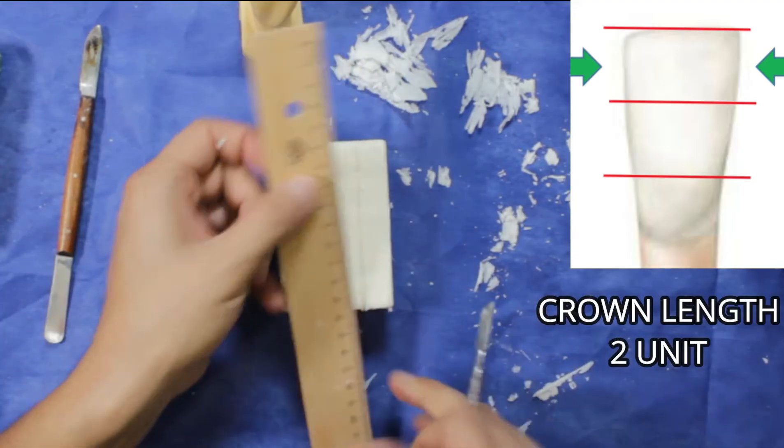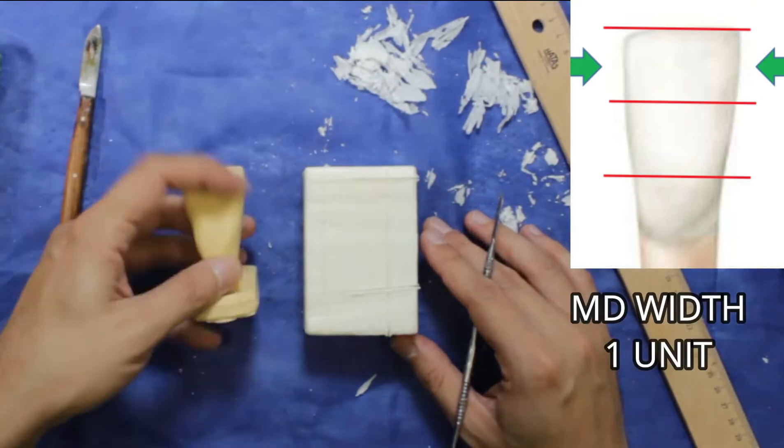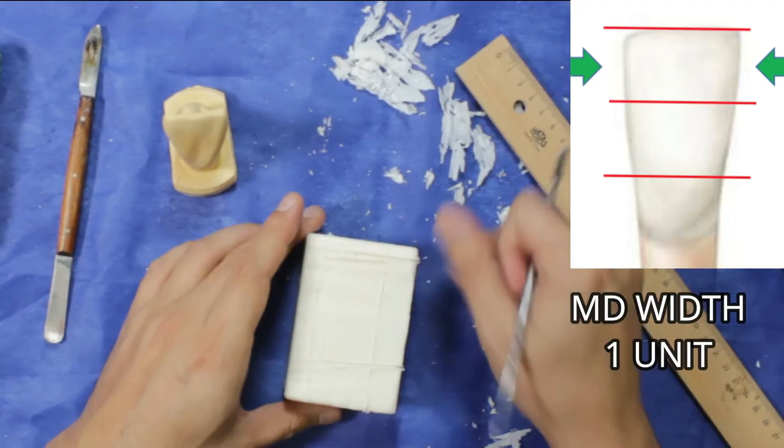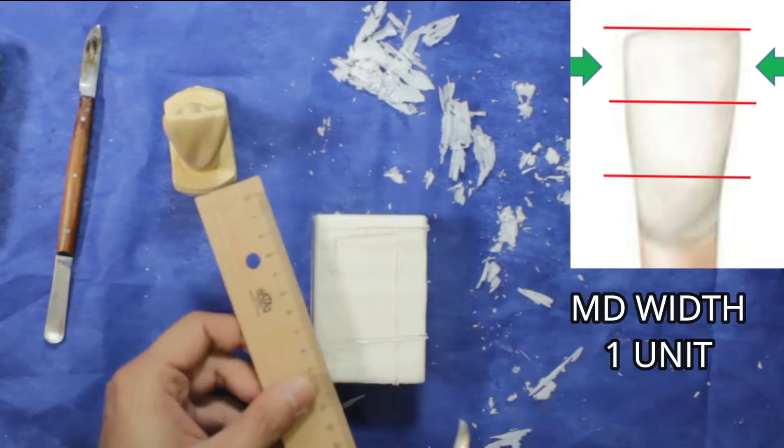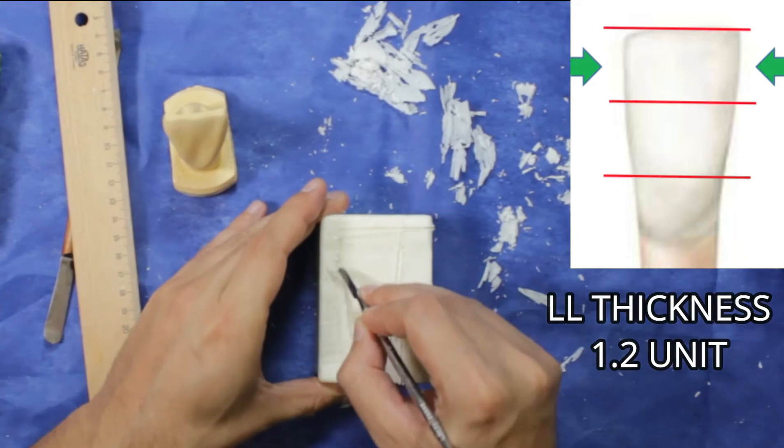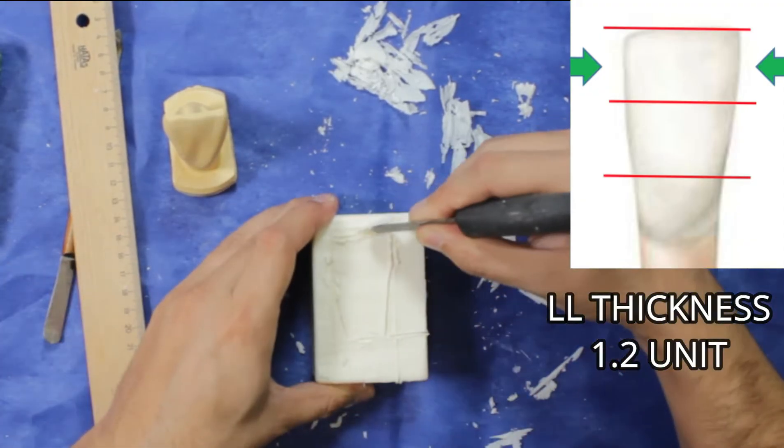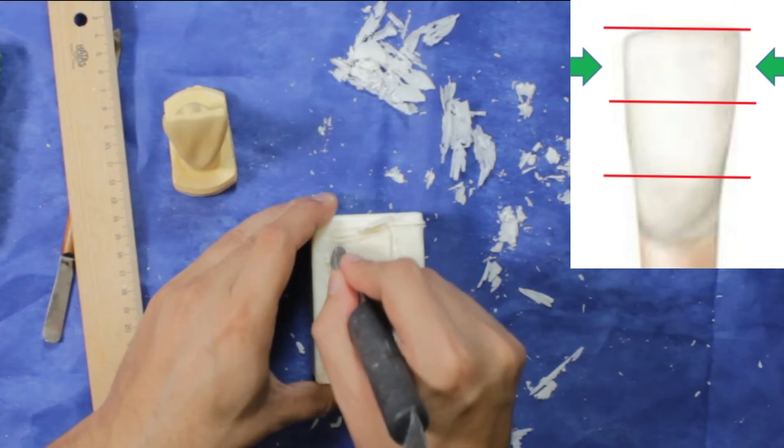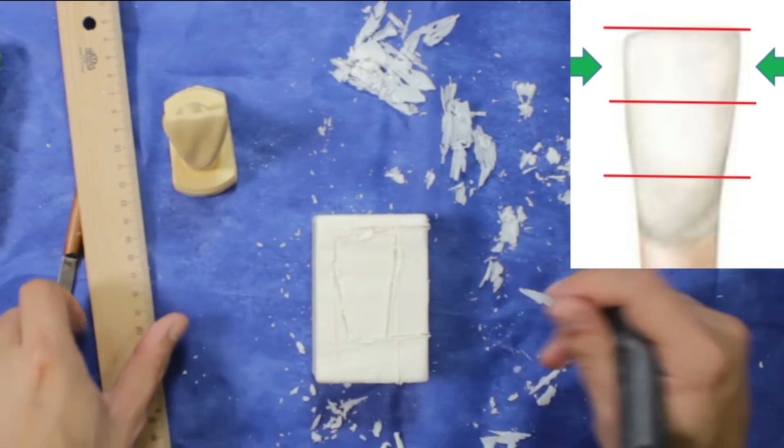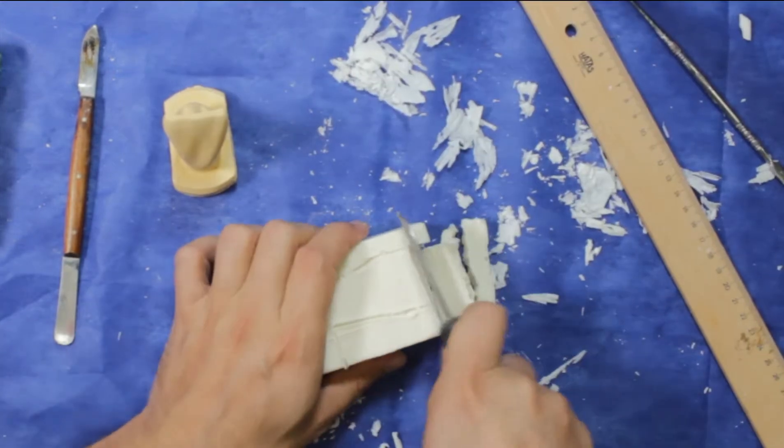And also labiolingual thickness is 1.2 units. And also you can mark each corner of the tooth. And now we will get rid of the excess soap particles.